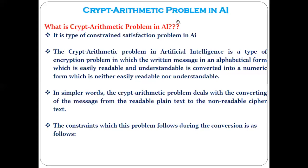Now, these problems are all called constraint satisfaction problems. Why is that? The problems we have solved — N-Queens, Sudoku, map coloring, graph coloring — why are these called constraint satisfaction problems? That is my question.